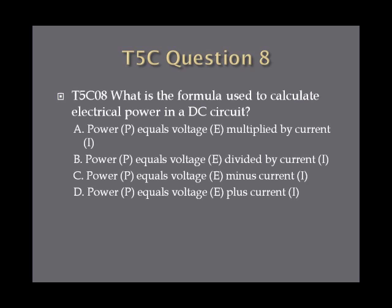Question eight: What is the formula used to calculate electrical power in a DC circuit? A. Power equals voltage multiplied by current. B. Power equals voltage divided by current. C. Power equals voltage minus current. Or D. Power equals voltage plus current.